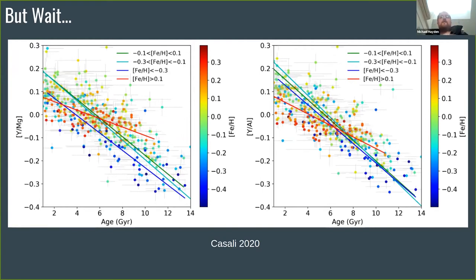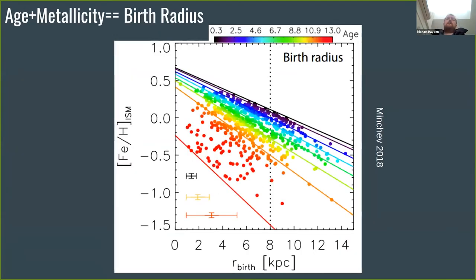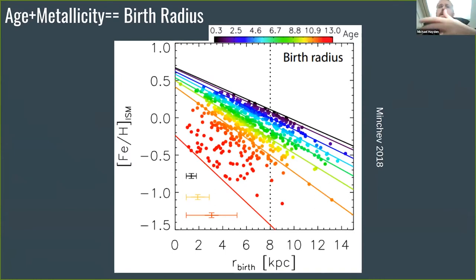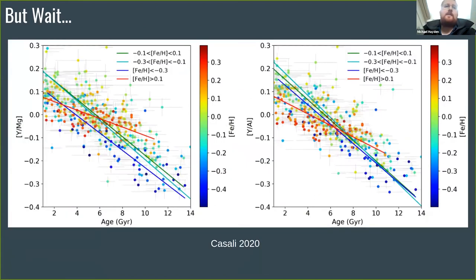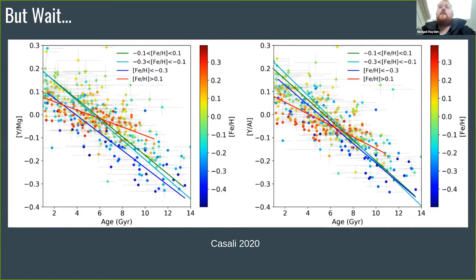The problem was the very limited sample size — about a dozen stars. When you try to generalize to a much larger sample of turnoff stars using HARPS data in Casali 2020, it's a bit of a mess. A lot of the scatter is driven by different metallicities at the same age. So our nice linear relation went away because metallicity and age together define the birth radius or the chemistry of a star.